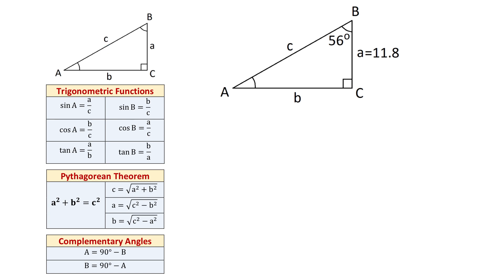Below we have the trigonometric functions sine, cosine, and tangent of angle A, and sine, cosine, and tangent of angle B. Sine of angle A is the opposite side A divided by hypotenuse C. Cosine of angle A is the adjacent side B divided by hypotenuse C. And tangent of angle A is the opposite side A divided by the adjacent side B.